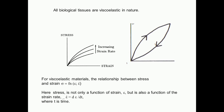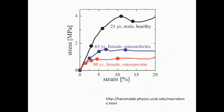If you look at the stress-strain diagram of bone from a healthy 21-year-old male, this is the modulus of elasticity or Young's modulus — it goes up and then there is a yield. A 65-year-old female with osteoarthritis has a much shorter stress-strain diagram, because osteoarthritic problems lead to the bone becoming very weakened. It loses a lot of its modulus of elasticity.